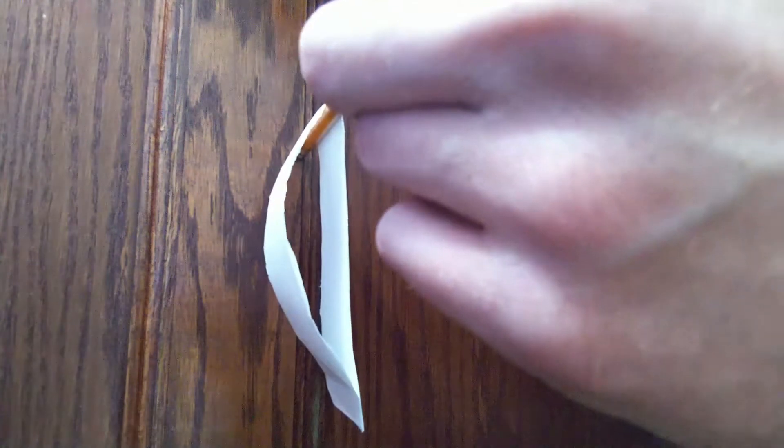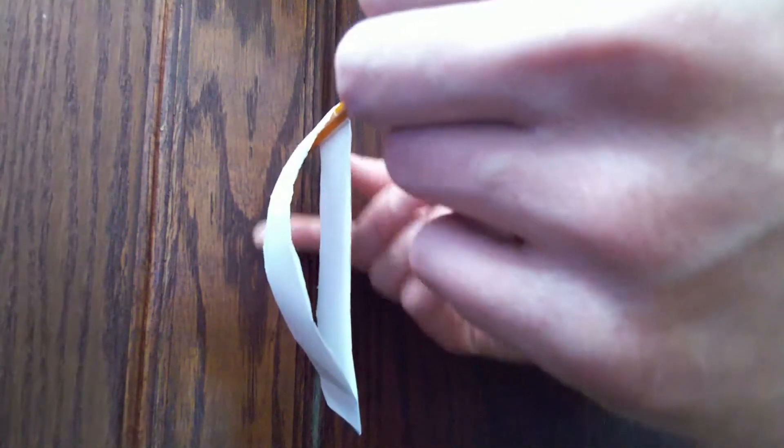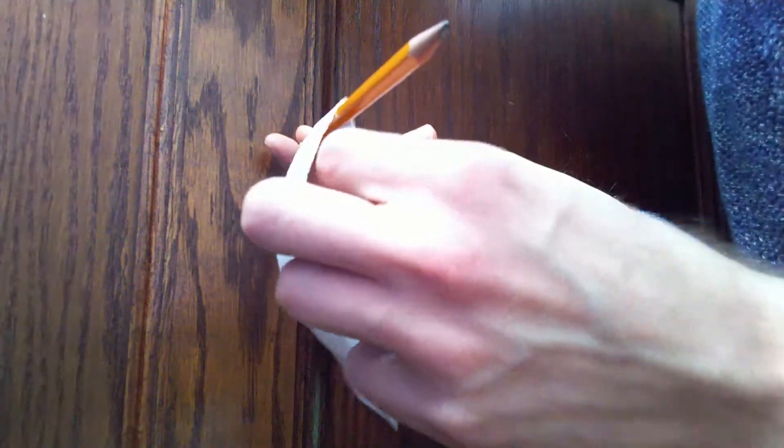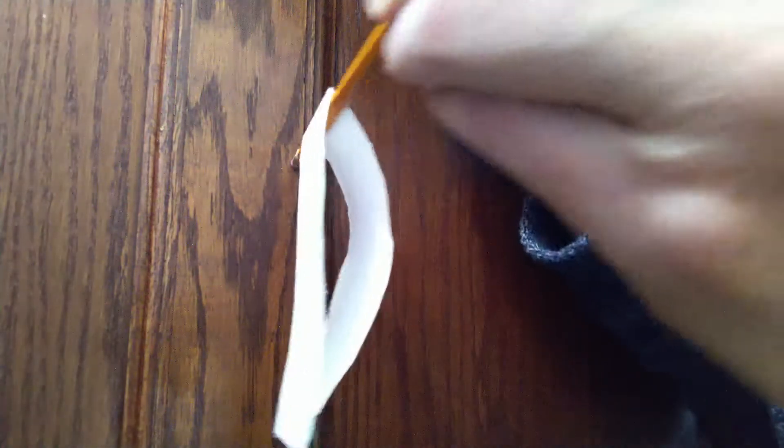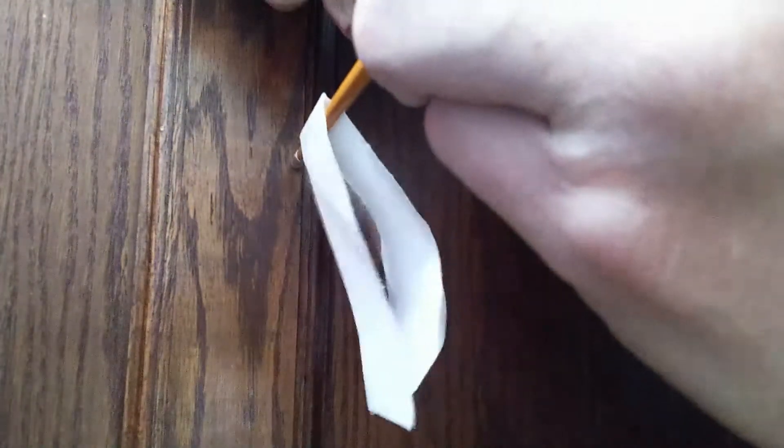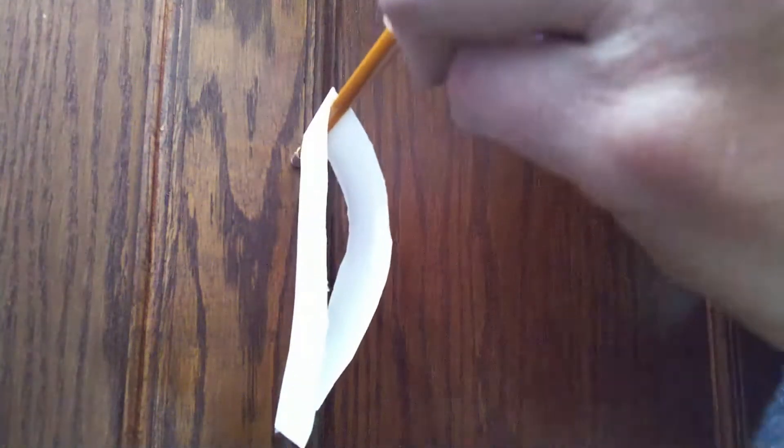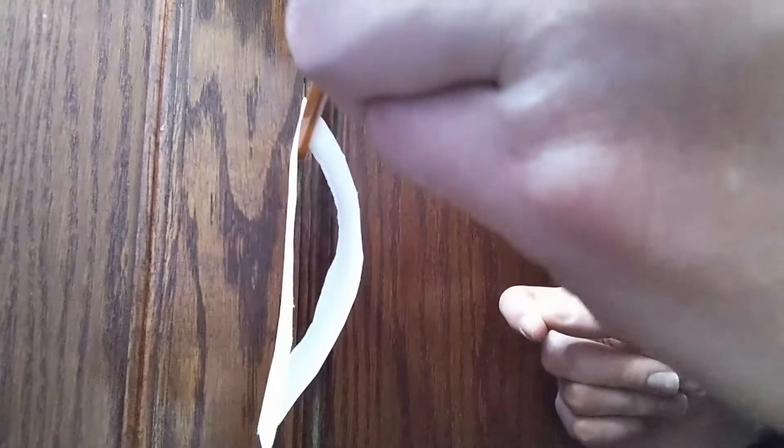As you can see, the airfoil always goes towards the curved side when the air flows over it. And that's going to be the case even if I reverse the direction. Or if I put it on this side and blow over top of it.